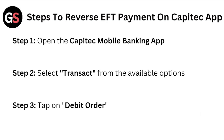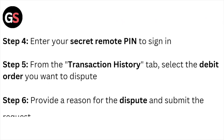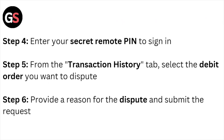Open the Capitec mobile banking application. Step number two: select Transact from the available options. Step number three: tap on the Debit Order. Step number four: enter your secret remote PIN to sign in. Step number five: from the Transaction History tab, select the debit order you want to dispute.